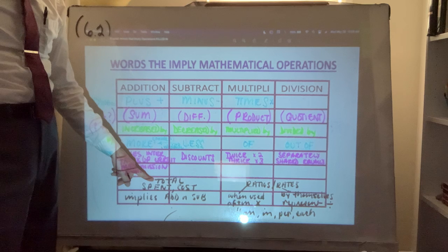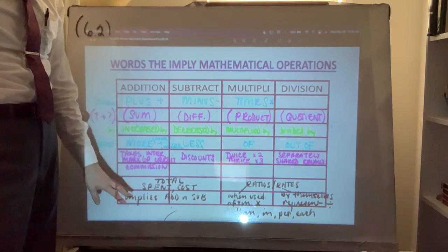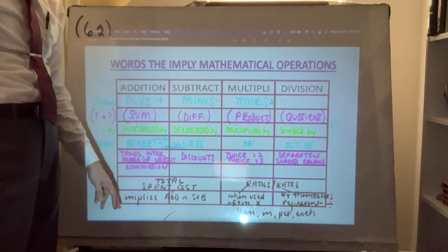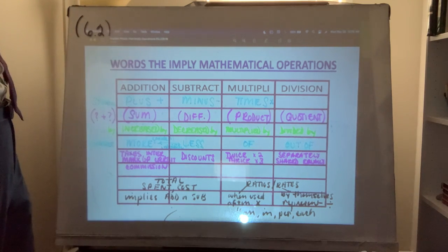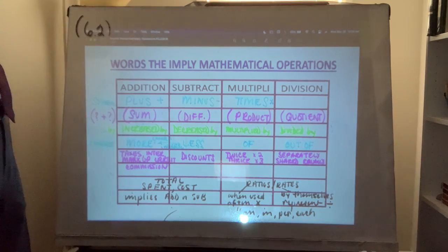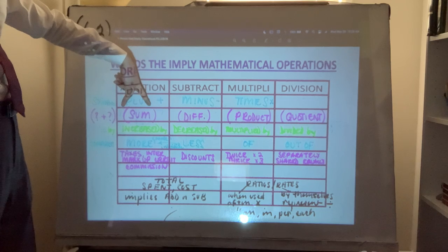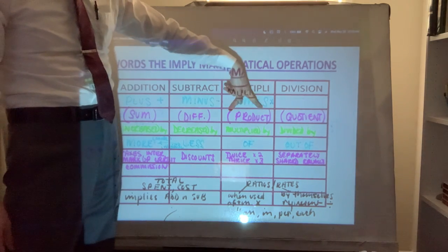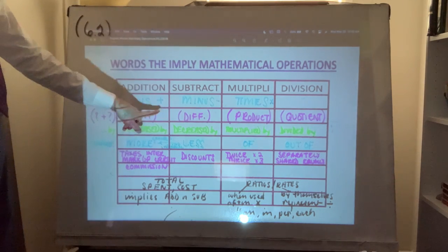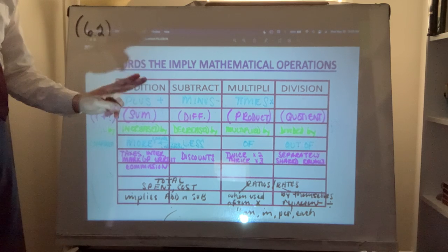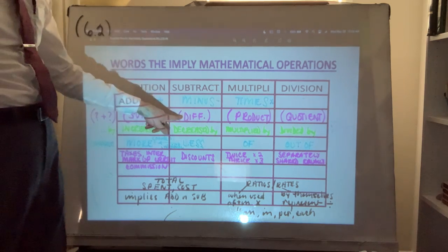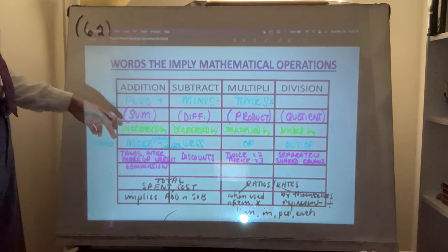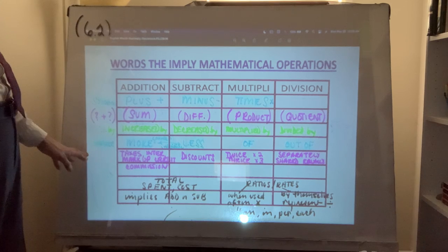It gets a little more vague when you see words like 'total' in a word problem — this usually implies adding or subtracting things, but depending on the specifics of the word problem there may be more to do. Discounts imply subtraction; taxes imply adding. Some are pretty self-explanatory like plus and minus. When you see the name of the result of an addition, subtraction, multiplication, or division problem — sum, difference, product, quotient — realize those are the result of at least two things combined. A sum should be encapsulated in parentheses.